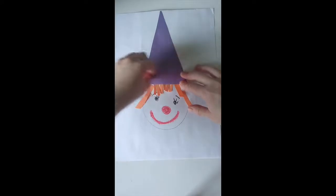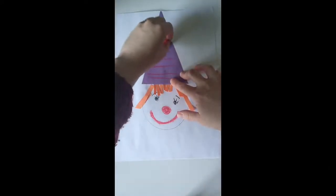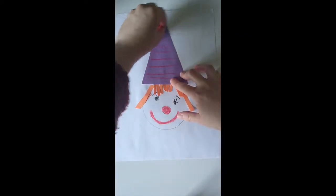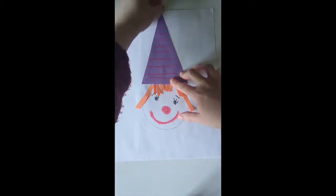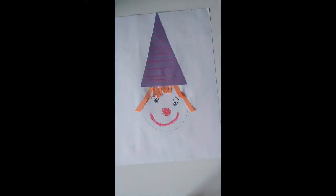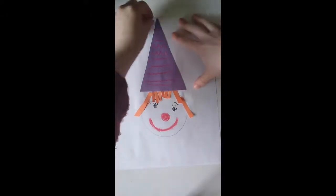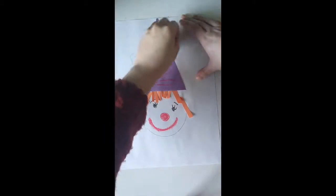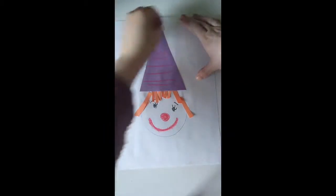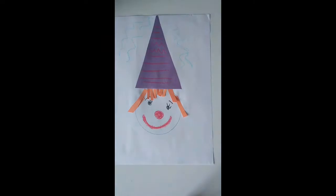So we can do some stripes, some zigzag lines, maybe even put something on top of his hat, or maybe do little things like this, like little strings coming off.